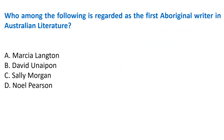Next question: 'Who among the following is regarded as the first original writer in Australian literature?' Questions related to Australian, Indian, and American literature are frequently asked. Australian literature is very important in the syllabus. Options: A) Marcia Langton, B) David Unaipon, C) Sally Morgan, D) Noel Pearson. The correct answer is Option B - David Unaipon.